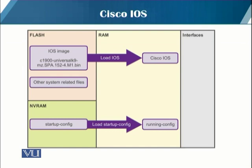The running configuration file is basically modified when the network administrator performs device configuration. When changes are made to the running config file, it should be saved to NVRAM as the startup configuration file in case the router is restarted or loses power.